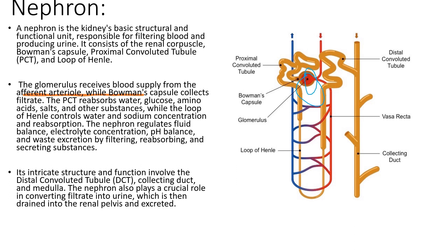The glomerulus is a network of tiny blood vessels or capillaries that receives blood supply from the afferent arteriole. The high pressure within the glomerulus allows for filtration of blood. The Bowman's capsule surrounds the glomerulus and collects the filtrate that is produced during the filtration process.